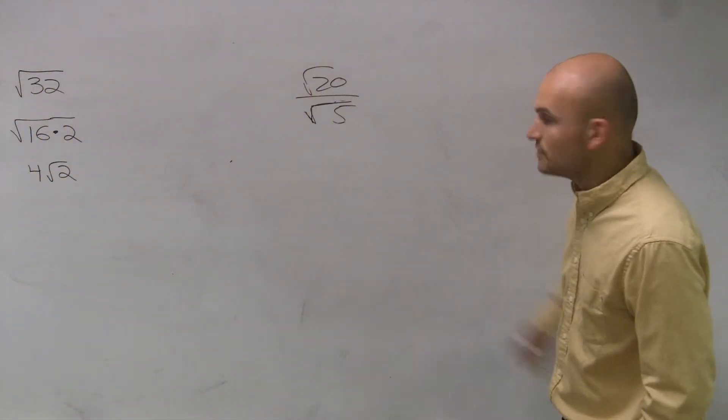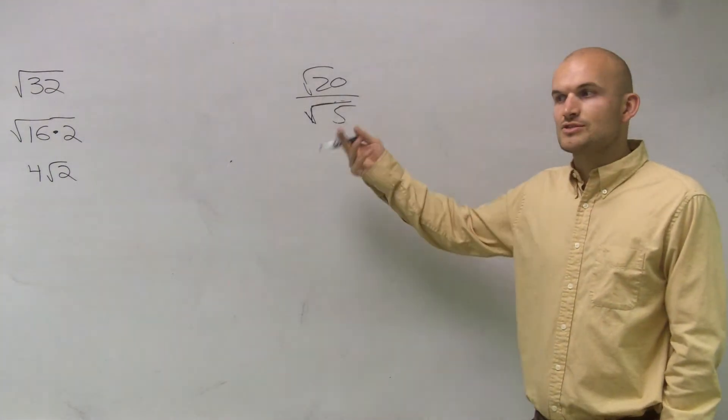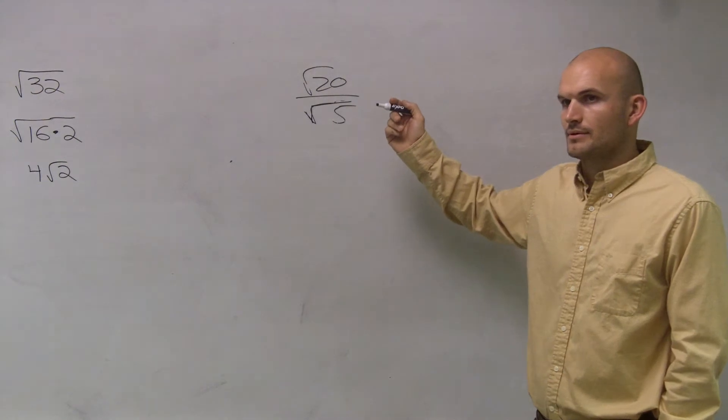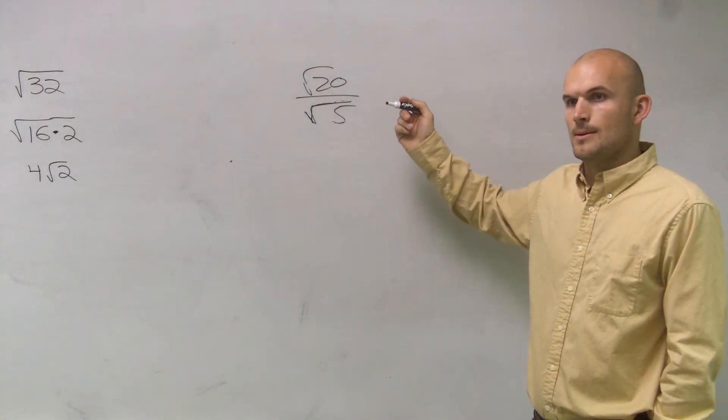So when I have the square root of 20 over square root of 5, I need to simplify the square root of 20. So I look to my square numbers. What is the largest square number that goes in the square root of 20?